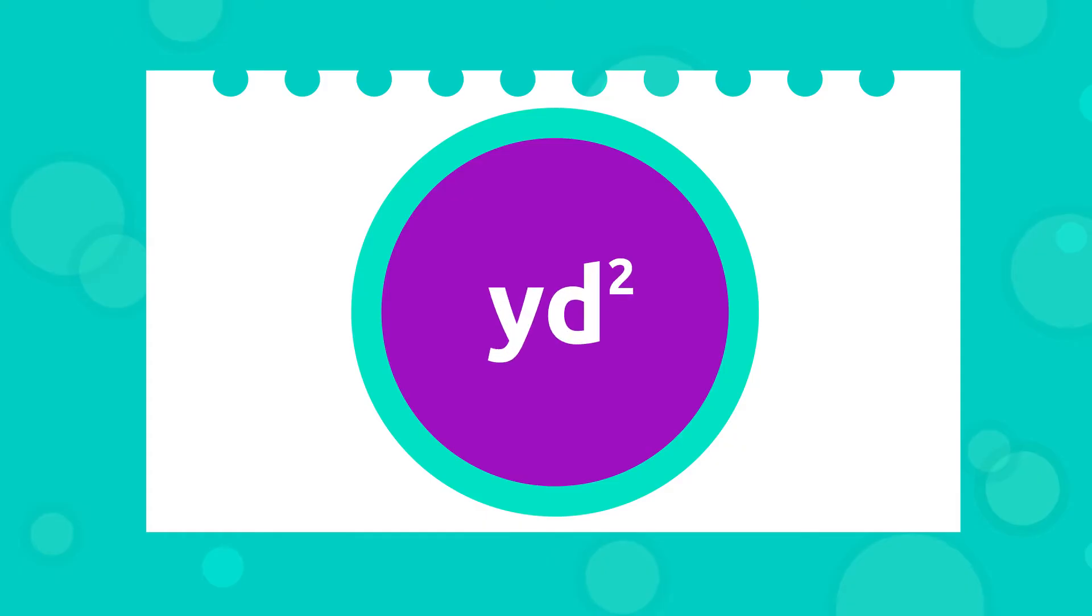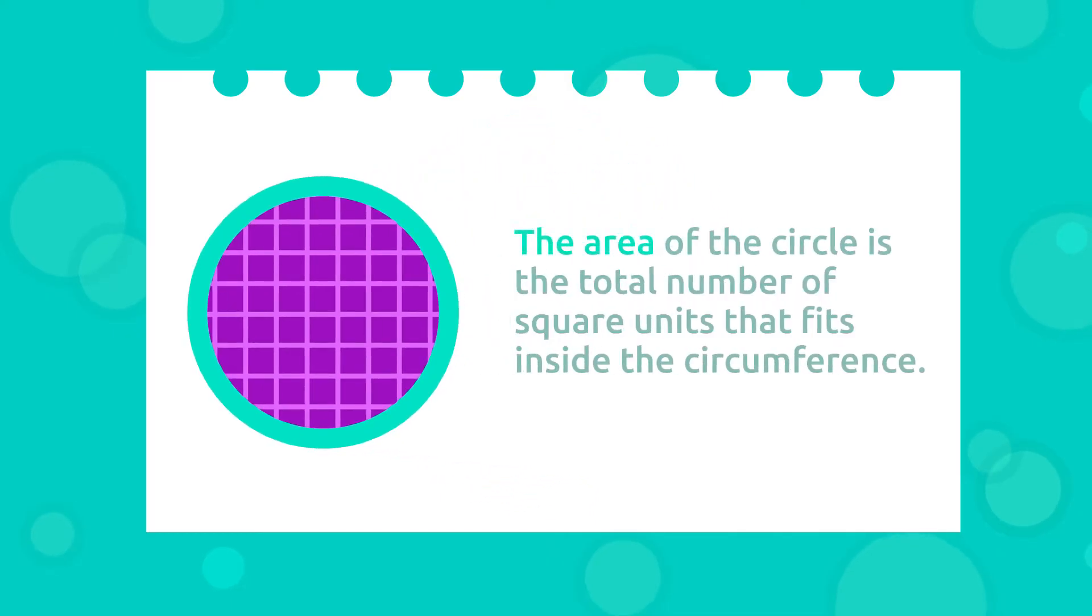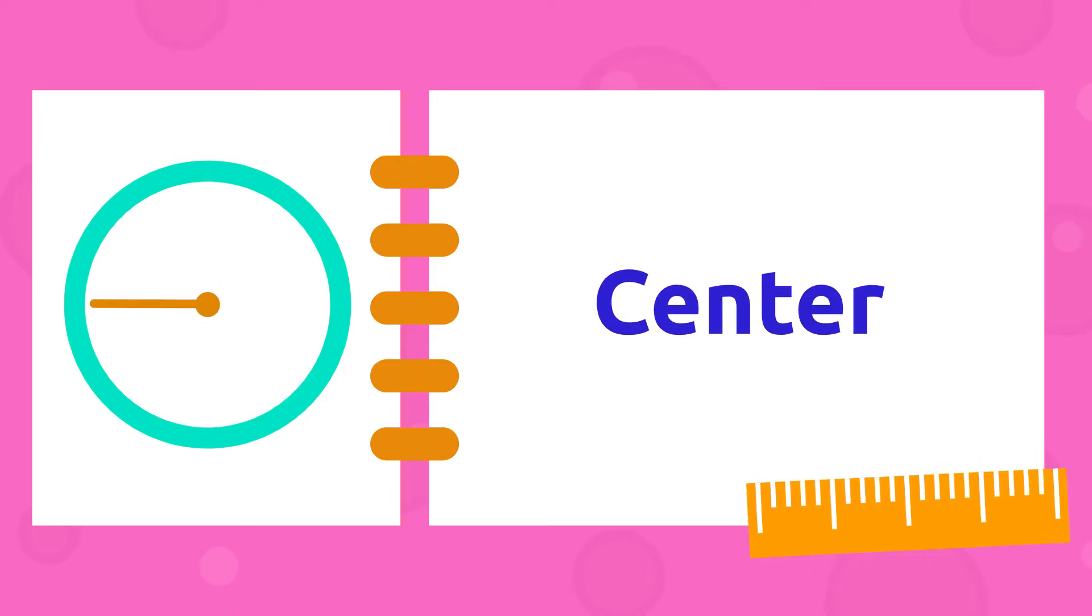We measure the circle in square yards, square inches, or square miles. As you can see in this picture, the area of the circle is the total number of square units that fits inside the circumference. First, let's recap some parts of the circle: here is the center, and this is the radius.